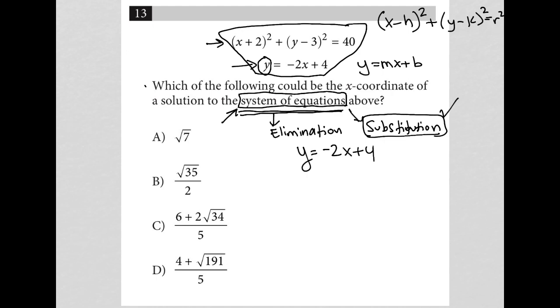So I'm going to take this y value, what it's equal to, the -2x + 4, and I'm going to substitute it into the top equation. So that would turn my top equation into (x+2)² + (instead of y, I'd have -2x + 4, and then minus 3)² = 40.